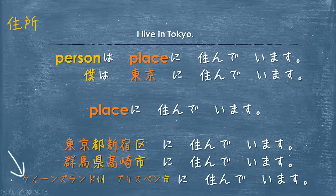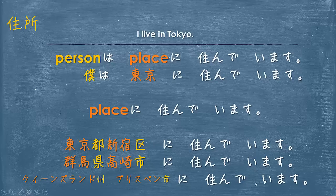When describing places overseas, we have to use a different way to describe the area of land. In Australia's case it would be the state, and this kanji means state. So it would be: Queensland-shuu, Brisbane-shi ni sunde imasu. Or more casually: Queensland, Brisbane ni sunde imasu. Large to small. I hope this helps.